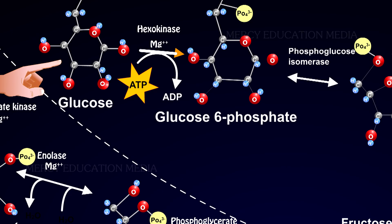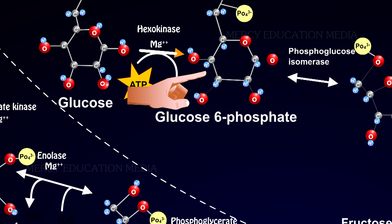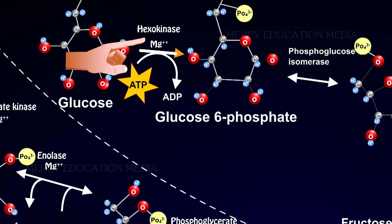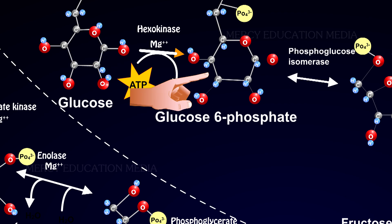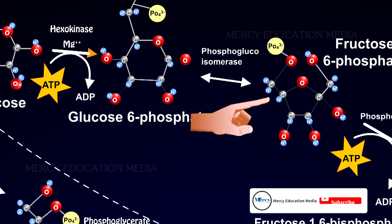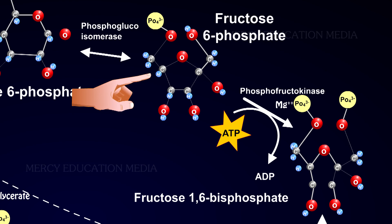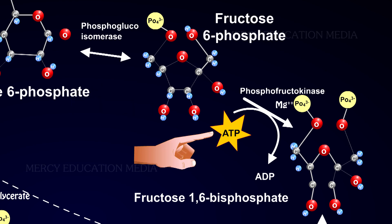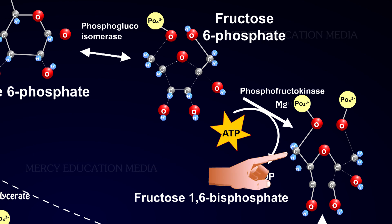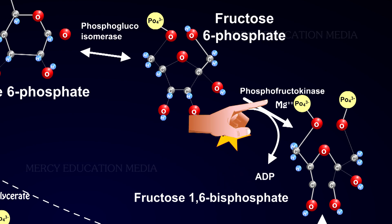Glucose is phosphorylated with ATP to form glucose 6-phosphate, catalyzed by hexokinase. Glucose 6-phosphate is then isomerized to fructose 6-phosphate by phosphoglucoisomerase. Fructose 6-phosphate is then phosphorylated using ATP to form fructose 1,6-bisphosphate, catalyzed by phosphofructokinase.